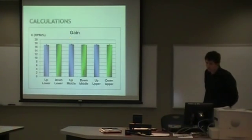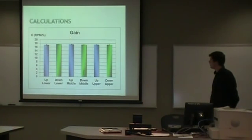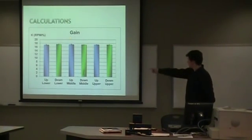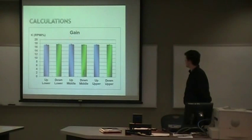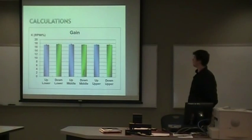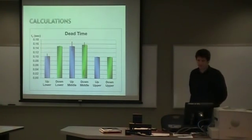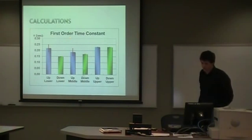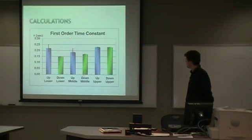Here's our gain for each of our runs: the up lower which is from 10 to 40, down lower which is 40 to 10, 40 to 70, and 70 to 100. You can see there's very little variability in that error bar on top. Same goes for the dead time, although there is a little bit more in the middle. And the first order time constant, you can see it's practically non-existent on the upper end from the 70 to 100 range and the 100 to 70 range.